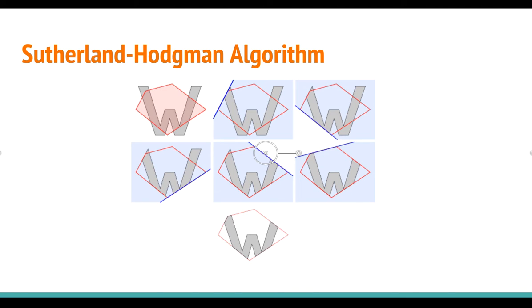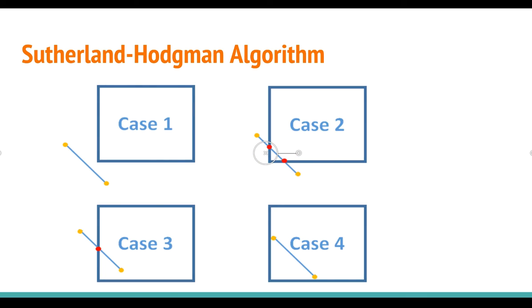So this algorithm basically uses one polygon as our cutting frame, and we use this cutting frame to cut another polygon. This is very easy to think about but not so easy to implement. To implement that, we need to consider four different cases.